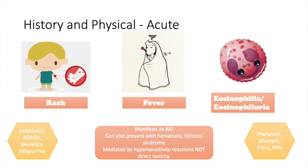Most of the time, TIN manifests itself as acute kidney injury. It can also present as gross hematuria and, in more severe cases, with Fanconi syndrome. It is very important to know that these reactions are mediated by hypersensitivity and not by direct toxicity by the insulting agent. Common causes of acute TIN are antibiotics, NSAIDs, diuretics, allopurinol, phenytoin, rifampin, interferon alpha, and PPIs.